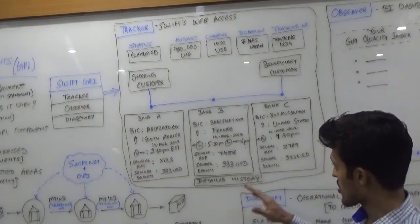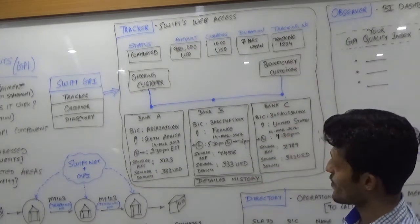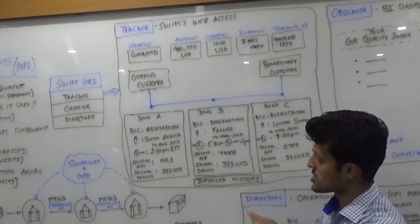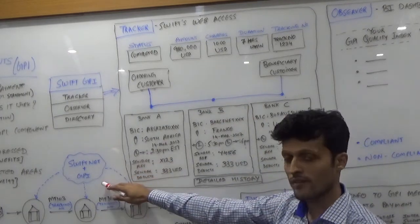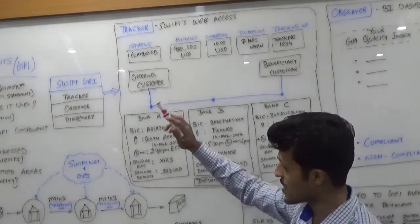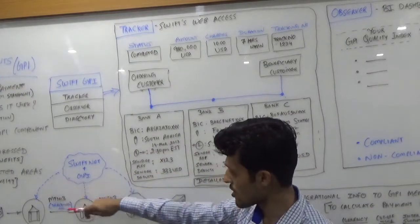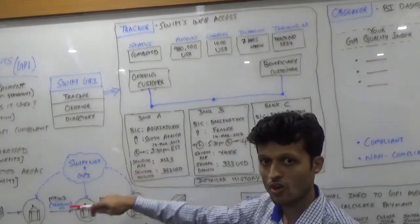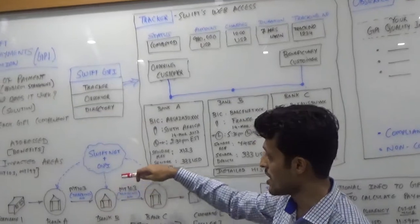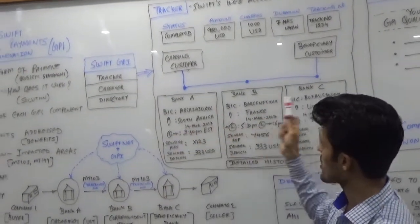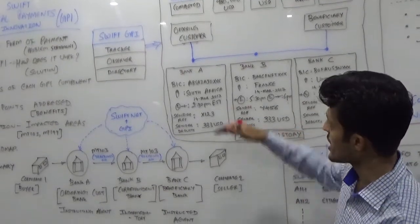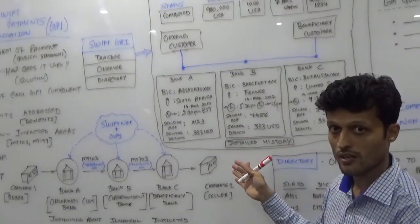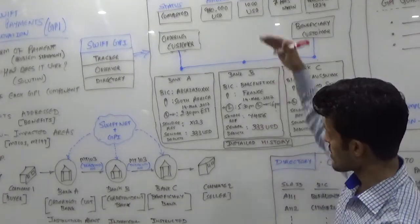Now here we can see the complete view. The good part about this dashboard is that it's located in the cloud where the Swift Net GPI is residing. Each bank is entitled to send a status update or in-between tracking with respect to this particular transaction. Consider the number of transactions flowing through like this, and each one getting updated in this particular portal.